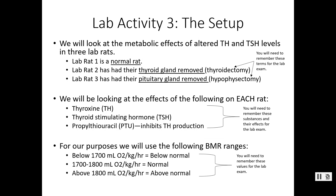In your lab manual, we have a theoretical experiment involving rats and thyroid hormone. We are working with three rats: rat number one is a perfectly normal rat; rat number two has had its thyroid gland removed — a thyroidectomy; and rat number three has had its pituitary gland removed — a hypophysectomy. Make sure you remember those two terms: thyroidectomy and hypophysectomy.